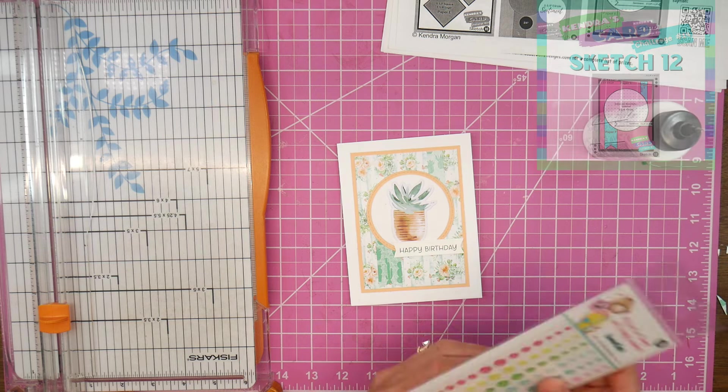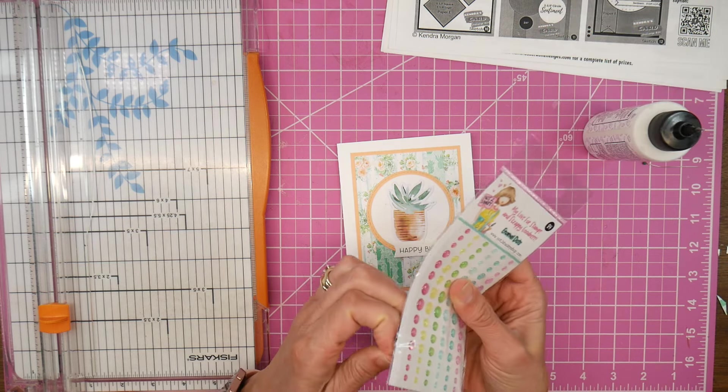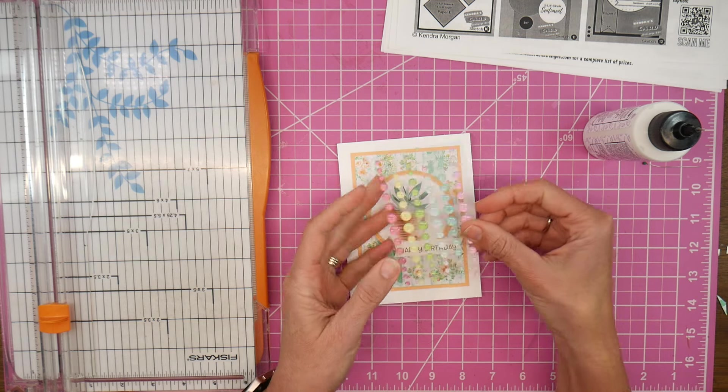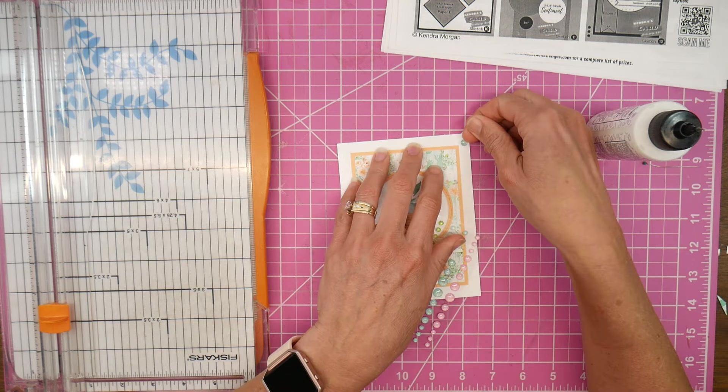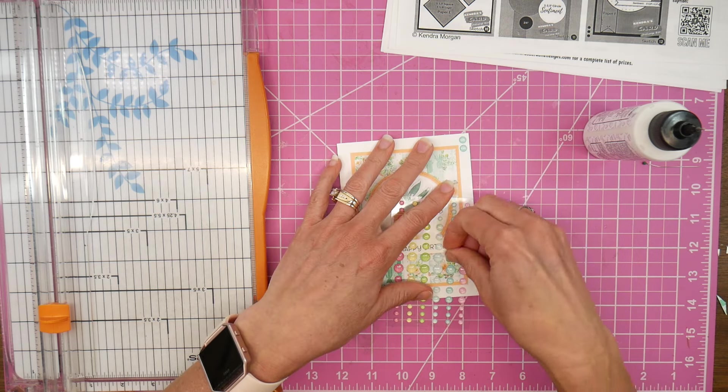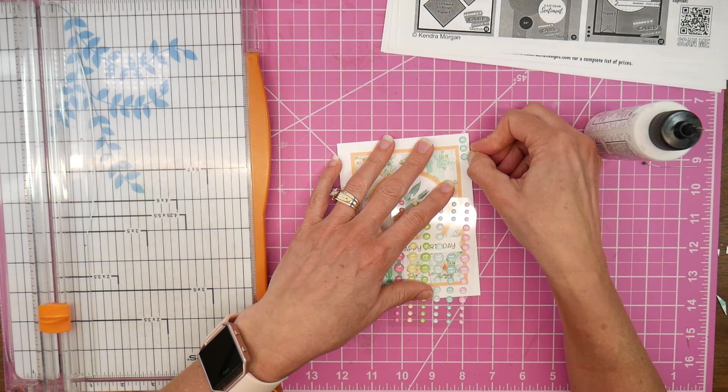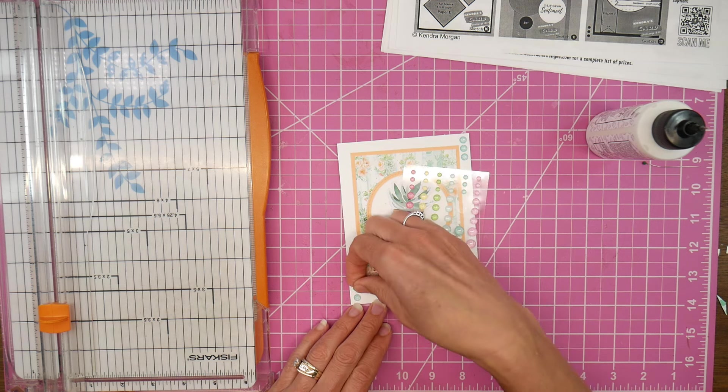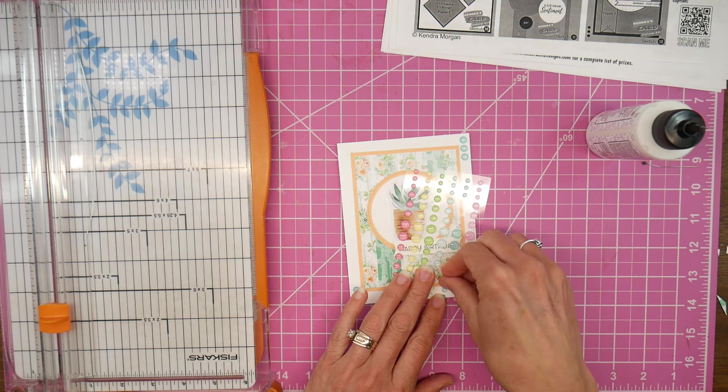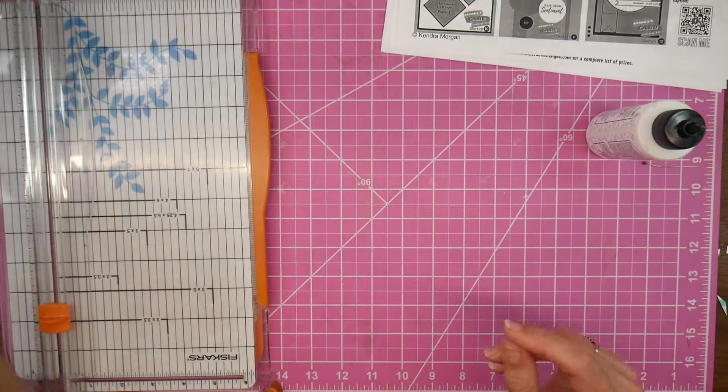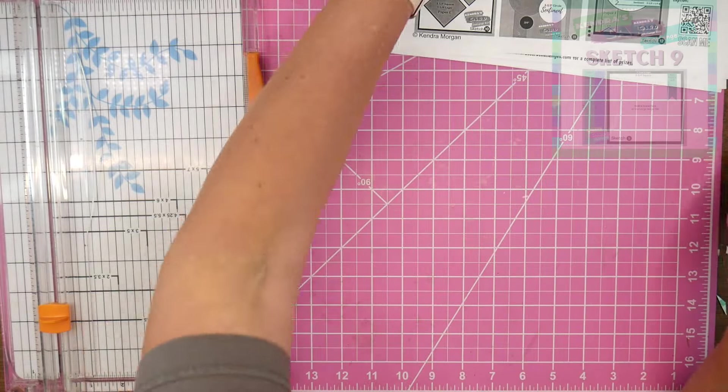And I will finish off my card with some of those enamel dots. These did not go with this succulent collection, but the colors did fit pretty well, and so that's why I went ahead and got these to use with this collection because especially the light blue greens and then even some of the pinks I think would work with some of the other patterns that I didn't use.